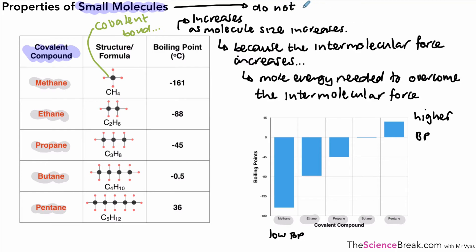One last property that we need to know about substances made of small molecules, and that is that they do not conduct electricity. The substances do not conduct electricity if they are made of small molecules. And the reason for that is because the molecules do not carry a charge. The molecules do not carry a charge, and therefore they cannot conduct electricity.